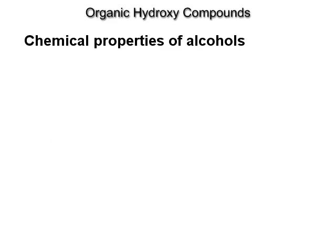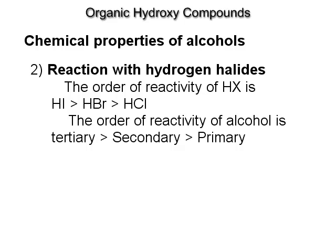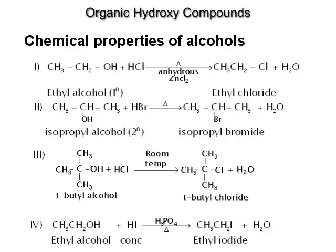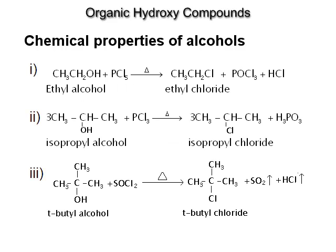Chemical properties of alcohols. Action of sodium: alcohols spontaneously react with metallic sodium to form sodium alkoxide with the liberation of hydrogen gas. Reaction with hydrogen halides: the order of reactivity of HX is HI > HBr > HCl. The order of reactivity of alcohols is tertiary > secondary > primary. Reaction with phosphorus halides and thionyl chloride: alcohols on refluxing with PCl5, PCl3, or SOCl2 give alkyl chlorides.